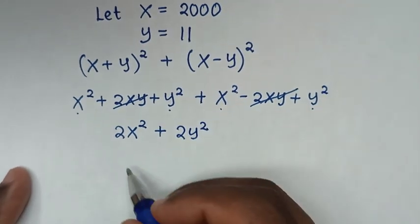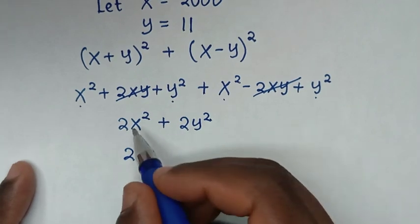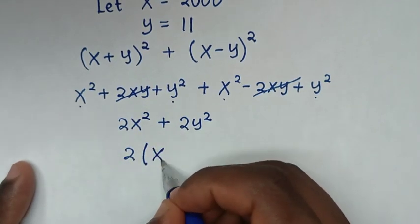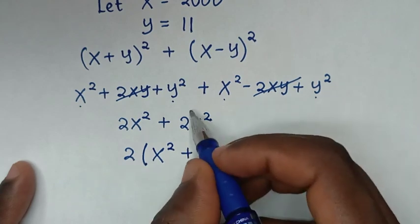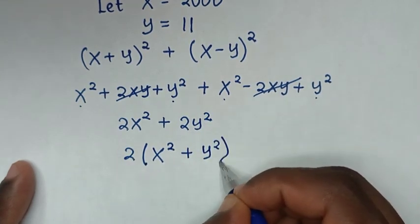Here 2 is common, so we factor out 2. This gives us 2(x² + y²).